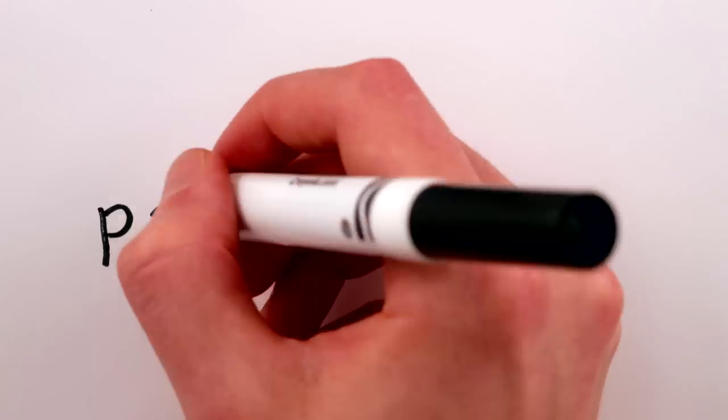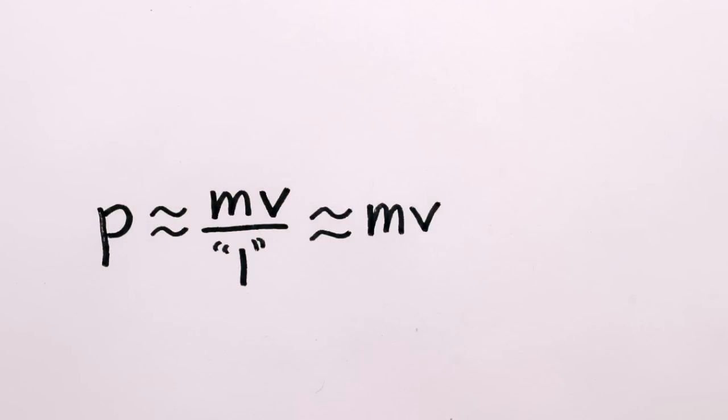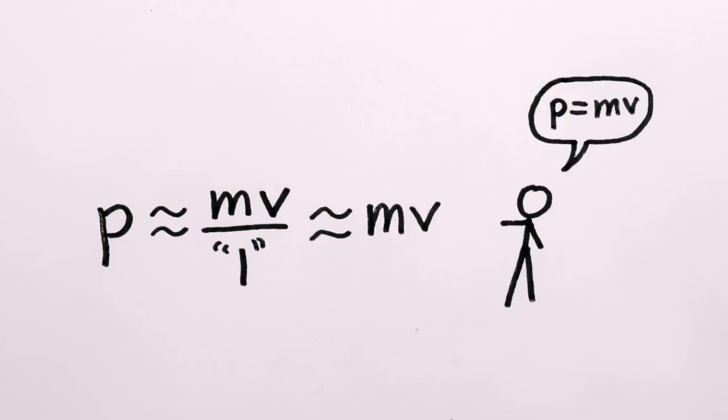So momentum, p, is pretty much just mv divided by 1, which is mv, which is why you learned in school that momentum is mass times velocity.